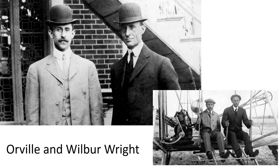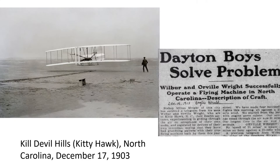People had been trying to fly forever, and in the late 19th century it was only a matter of time before someone started applying a power source to lighter-than-air travel. That leads us to the famous flight of Orville and Wilbur Wright, shown here in Kitty Hawk, North Carolina. The motorized plane could fly fast enough to get lift, and they went across the sand dune — and here you have a news story announcing their success.